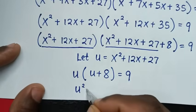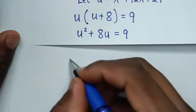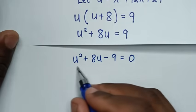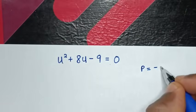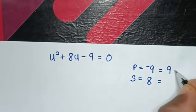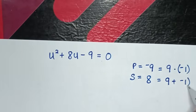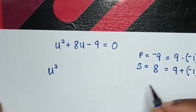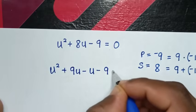Expanding: u²+8u = 9. Taking 9 to the left side: u²+8u−9 = 0. This can be solved by factorization: product = −9, sum = 8, giving factors 9 and −1.